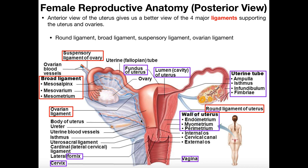The rest of the ligaments are more straightforward. The ovarian ligament is the ligament that holds the ovary in place. Remember, the fimbriae of the fallopian tube do not actually make direct contact with the ovary — they don't hold it in place. The ovary is held in place through two ligaments: the broad ligament, and the ovarian ligament, which anchors the ovary directly to the uterus. The ovarian ligament actually resembles a true ligament like you might find in the knee joint — it's a rope-like structure.